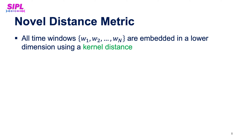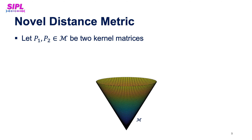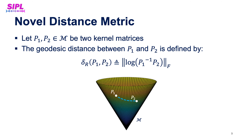So how does it work? We operate on time windows, where each window contains data from all channels. We embed all the windows into a lower dimension using a kernel distance. The resulting kernel matrices are symmetric and positive definite, so they live on an open convex cone with a known non-Euclidean geometry and a Riemannian metric. Such a manifold has a unique geodesic curve between any two points, and the length of that curve defines the Riemannian distance we use as a measure of abnormality.